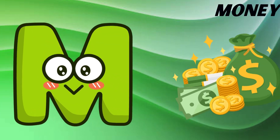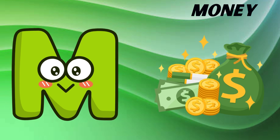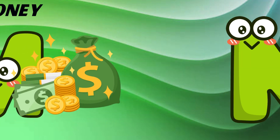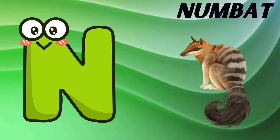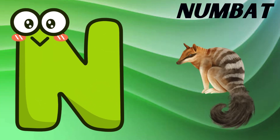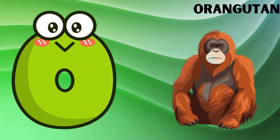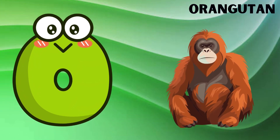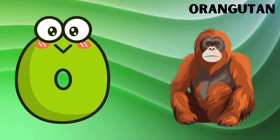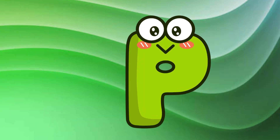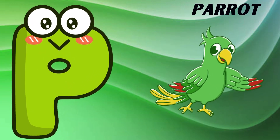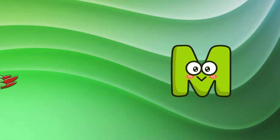M is for money, m-m-money. N is for numbat, n-n-numbat. O is for orangutan, o-o-orangutan. P is for parrot, p-p-parrot.